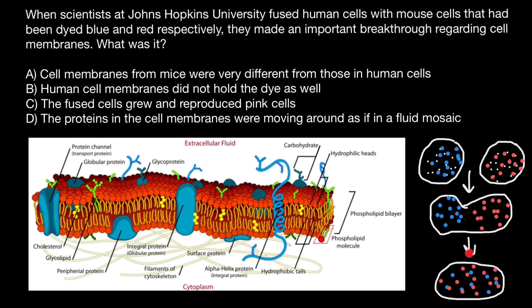They called it the fluid mosaic model of the cell membrane, proving that the cell membrane behaves as a fluid and that proteins can also move freely and change places. Now let's check our answers. Variant A: cell membranes from mice were very different from those in human cells. It is obvious that we have different proteins because we are different species, so this was not the hypothesis of the experiment.